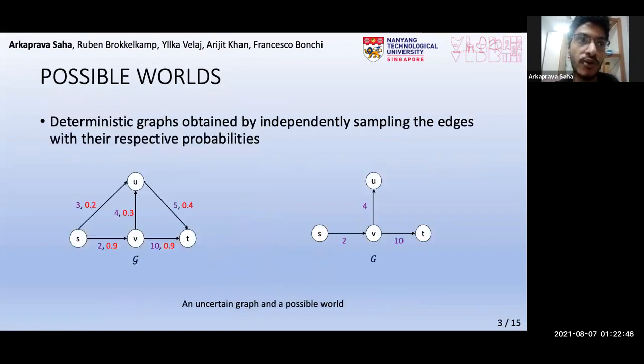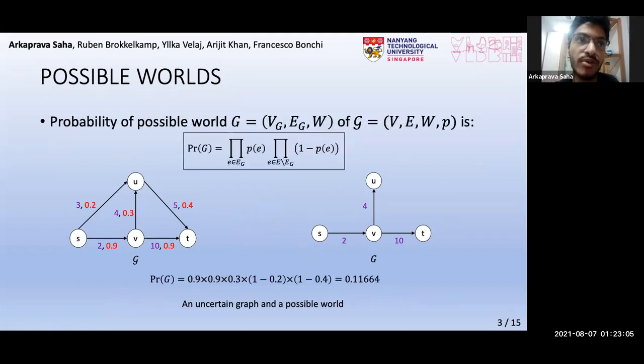So, to mitigate this issue, following the bulk of the literature, we adopt the concept of possible worlds, which are deterministic graphs obtained by independently sampling the edges with their respective probabilities. This figure shows an example of a possible world, where some edges exist while the others don't. The probability of a possible world is the probability that all its edges exist and none of the others exist, as illustrated here.